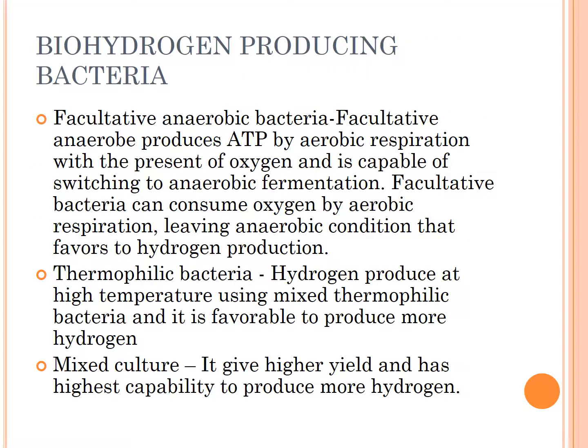Next is biohydrogen-producing bacteria. There are three types: facultative anaerobic bacteria, thermophilic bacteria, and mixed culture bacteria. Facultative anaerobic bacteria produces ATP by aerobic respiration in the presence of oxygen and is capable of switching to anaerobic fermentation, consuming oxygen and leaving anaerobic conditions that favour hydrogen production. Thermophilic bacteria produce hydrogen at high temperatures, which is more favourable for production. Mixed culture gives higher yield and has the highest capability to produce more hydrogen.